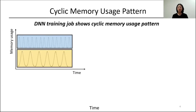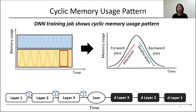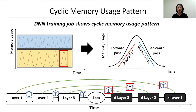However, training jobs don't fully utilize the memory. They expose a cyclic memory usage pattern composed of two phases: the allocation phase during the forward pass and the deallocation phase during the backward pass. This up-and-down shape of memory pattern appears because outputs of the forward pass, so-called feature maps, are required by gradient calculation in the backward pass. Hence, we can find all models form this shape of memory pattern during a training iteration.